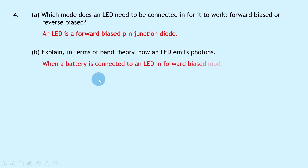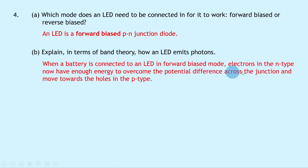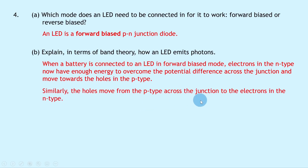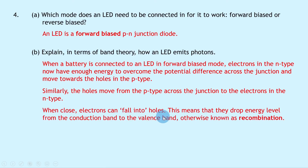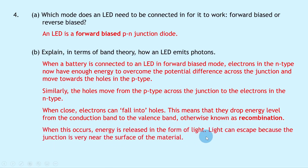When a battery is connected to an LED in forward bias mode, electrons in the N-type now have enough energy to overcome the potential difference across the junction and move towards the holes in the P-type. Similarly, the holes move from the P-type across the junction towards the electrons in the N-type. When close, electrons can fall into the holes, meaning they drop energy level from the conduction band to the valence band — otherwise known as recombination. When this occurs, energy is released in the form of light, i.e. photons. Light can escape because the junction is very near the surface of the material.